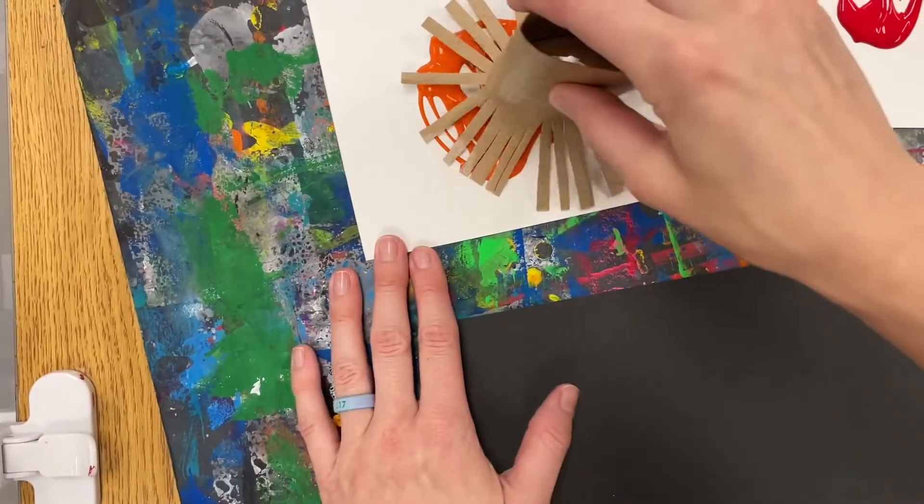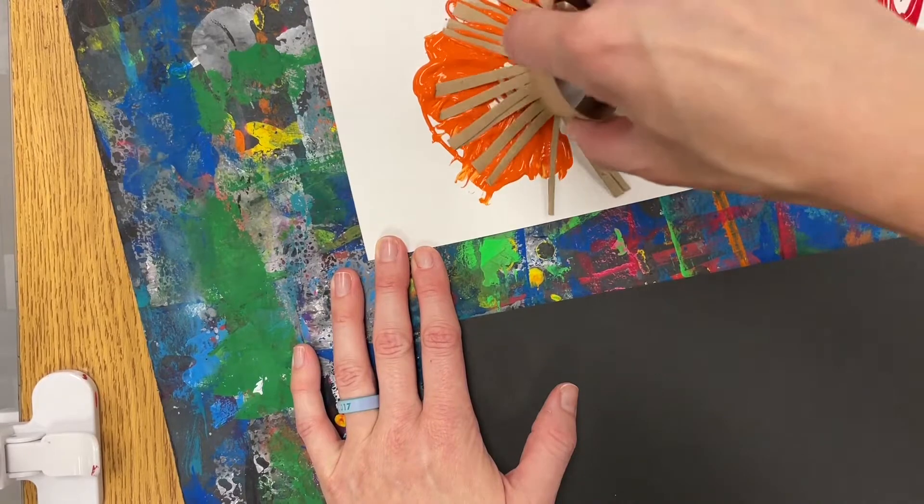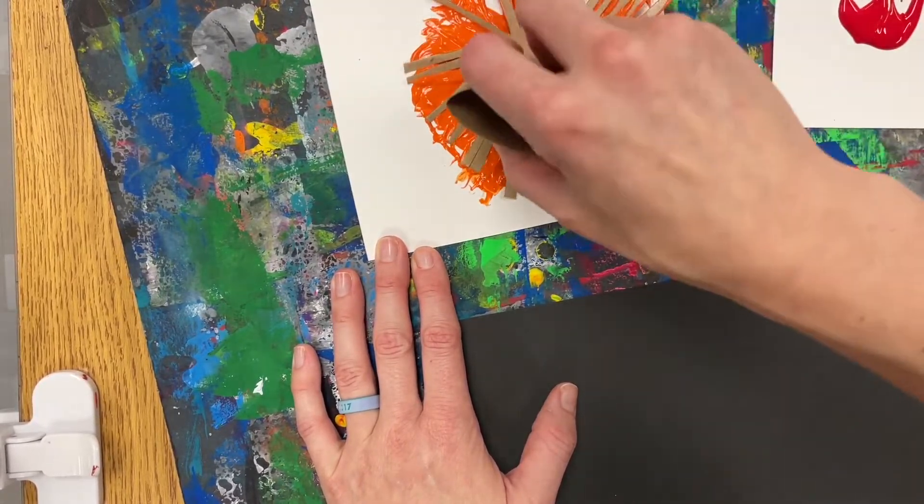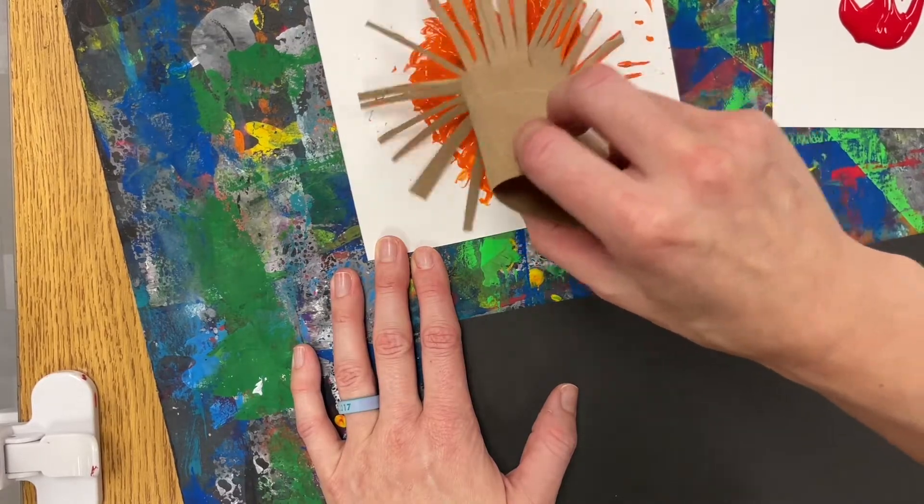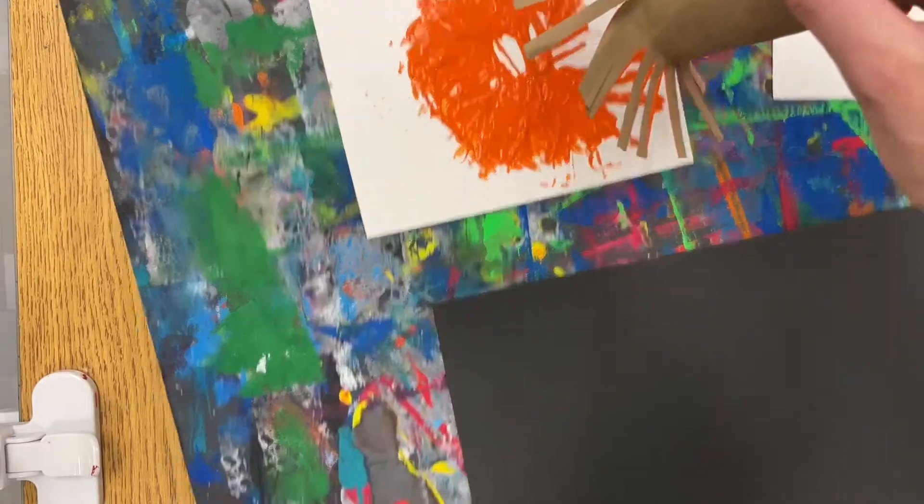To get your paper towel roll ready for stamping, you're gently going to pat it around in the color of paint you're starting with, just one paint color at a time. Be very gentle and you turn it until you notice that there's paint on all the parts of the cardboard or most of it.